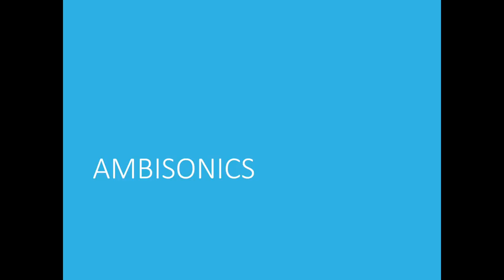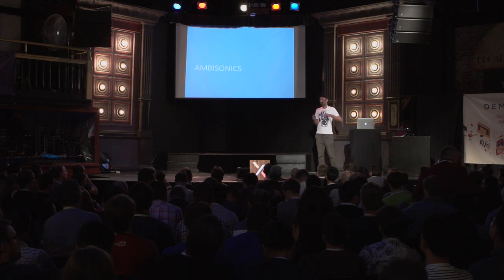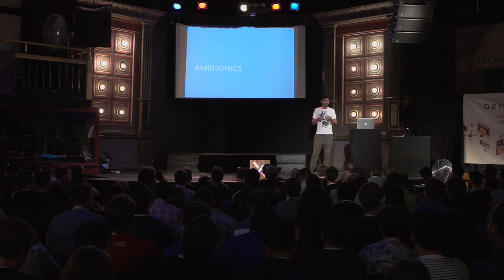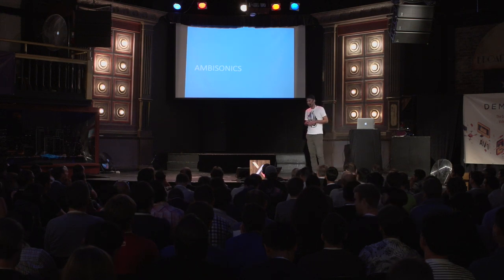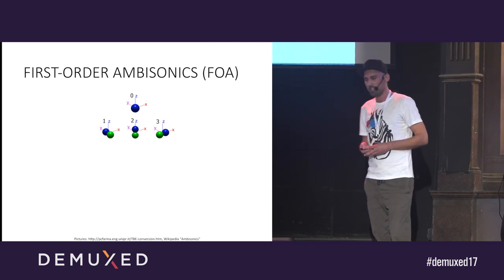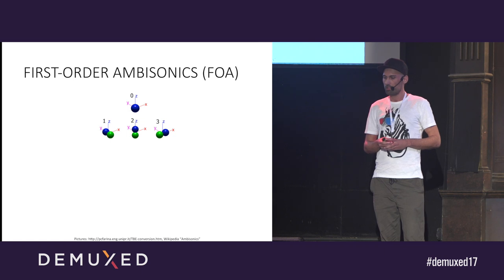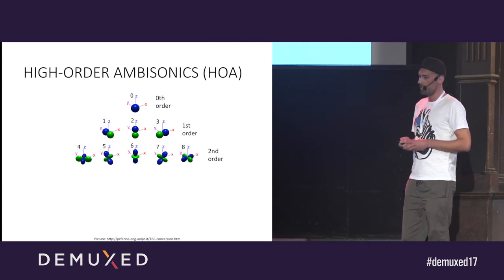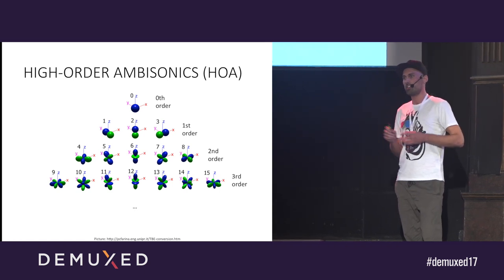That brings us directly to ambisonics. Ambisonics is a way to capture and transport the full sphere of sound, capturing directions all around the listener — not just on the horizontal plane like traditional surround sound. It does that by consisting of a number of spherical harmonics signals. Ambisonics was invented in the 70s, so most trademarks and patents have already expired and it's basically free to use. Those four audio channels we already know are called first-order ambisonics. Adding spherical harmonics of higher orders gives us higher-order ambisonics, and the higher the order, the better the directional resolution.